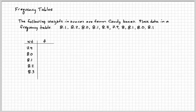It doesn't matter which one. I'll choose the first one, 8.1, and I will put a tick mark under the frequency column adjacent to 8.1. Then 8.2, I'll put a tick mark on 8.2. And then the next one, 8.0.